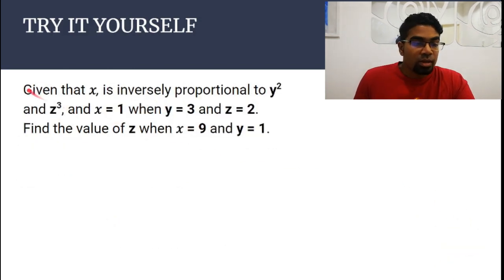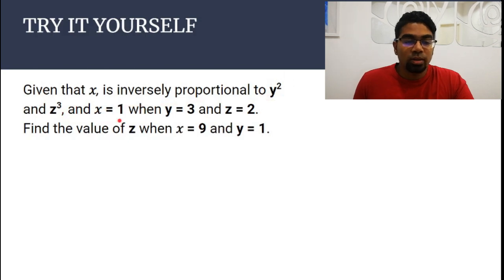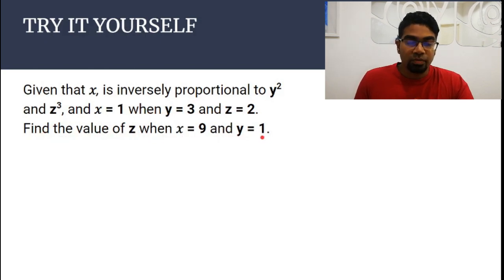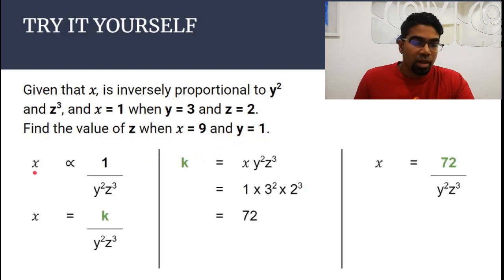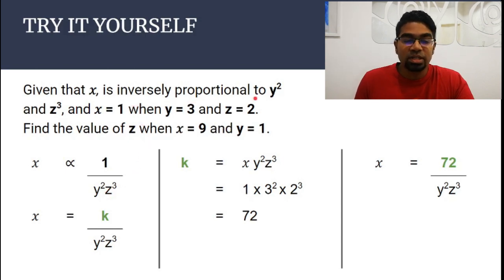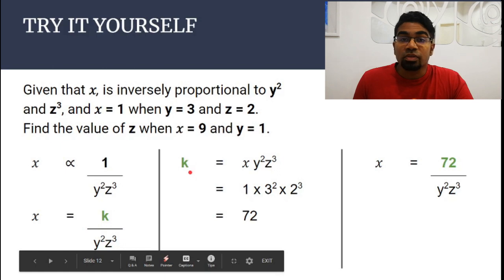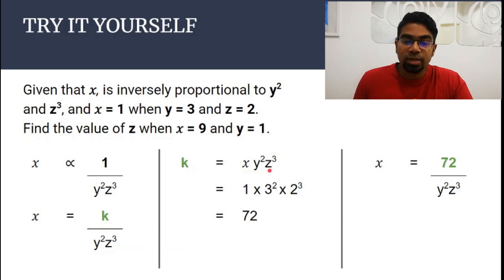Let's try a question. Given that x is inversely proportional to y squared and z cubed, and x is 1 when y is 3 and z is 2. As always, the first thing you do is find the relationship between all the unknowns in the form of an equation. Find the value of z when x is 9 and y is 1. First, write down the proportionality: x is proportional to 1 over y squared z cubed because it is inversely proportional. Then add the proportionality constant: x equals k over y²z³.